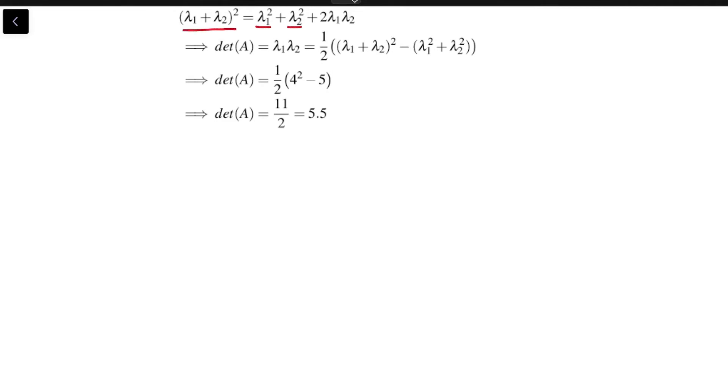equals λ₁² + λ₂² + 2λ₁λ₂, right? And we know that λ₁ + λ₂ is 4. So this is 4² equals λ₁² + λ₂², which is 5, plus 2λ₁λ₂.